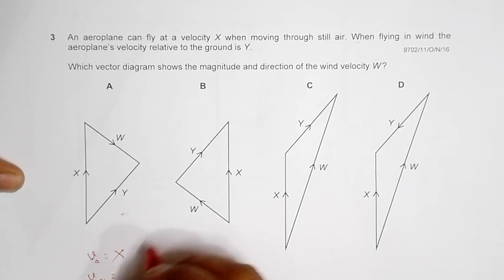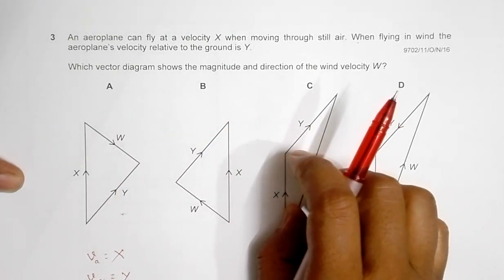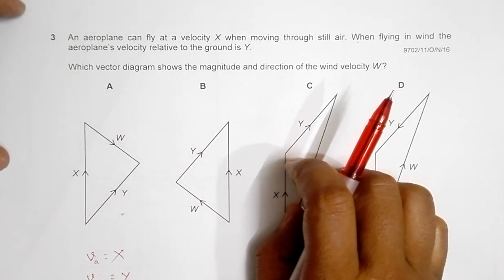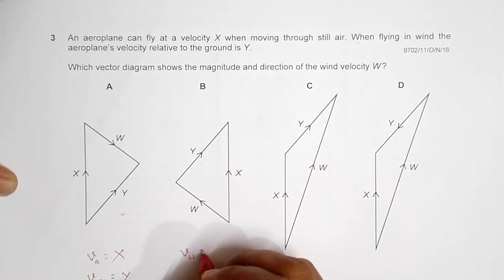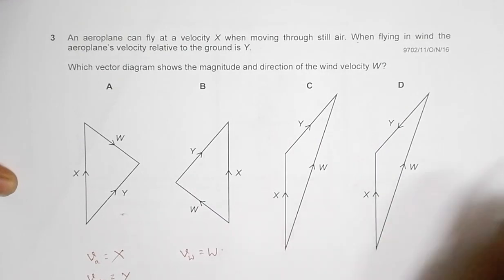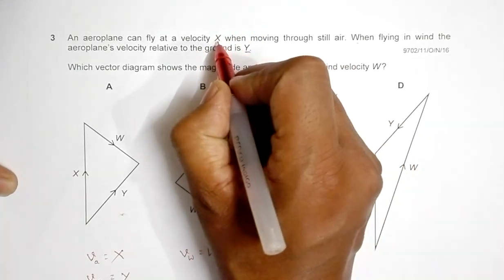We have to find which vector diagram shows the magnitude and direction of the wind velocity w. As the language of the question goes, y is the resultant effect of x and w.